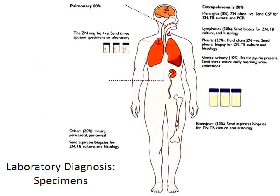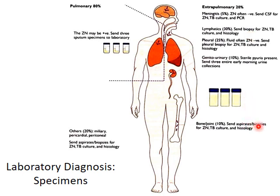Regarding the specimen, the sample collected in case of pulmonary tuberculosis would obviously be sputum. In case of extra-pulmonary tuberculosis, the sample depends upon the site involved — for example, CSF in case of meningitis, biopsy in case of lymph node involvement, and aspirates or biopsies in case of bone or joint involvement.